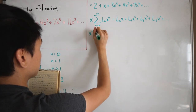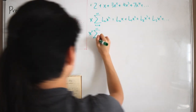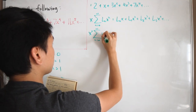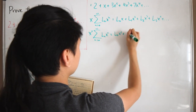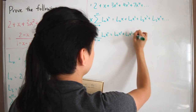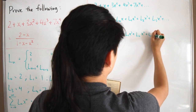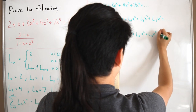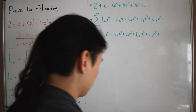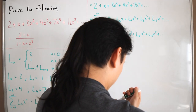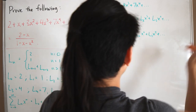Next we multiply by x squared: x squared times the sum of L_n x^n gives L_0 x squared plus L_1 x cubed plus L_2 x to the fourth plus L_3 x to the fifth, and so on. This is equation 2.